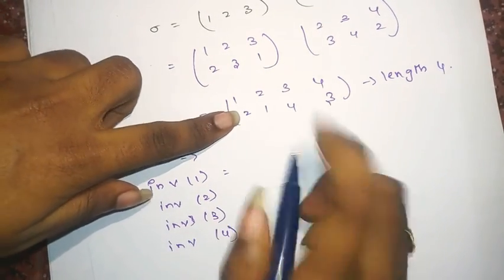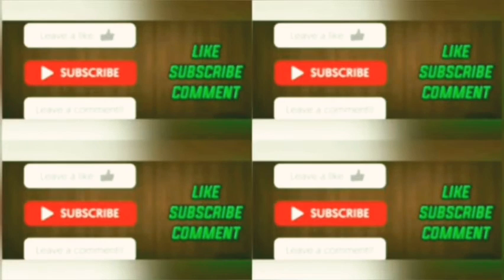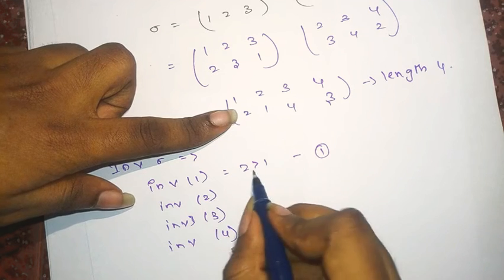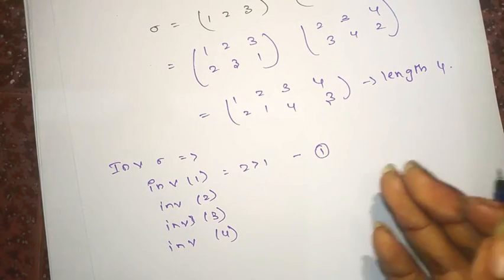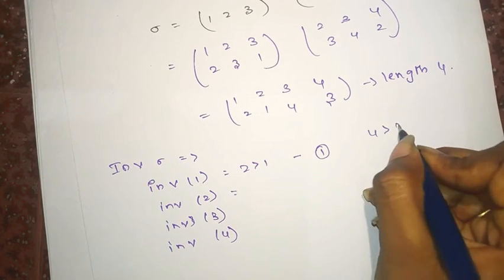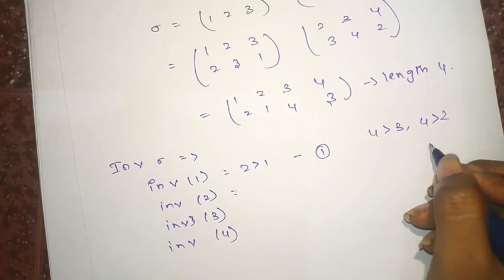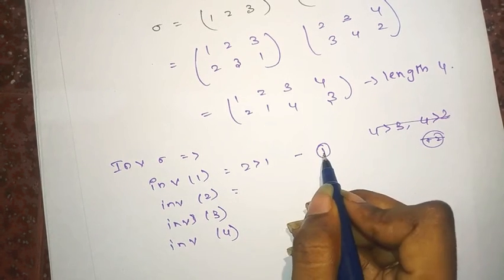Since 2 is greater than 1, it is 1. If you have any questions on other topics, please leave it in the comment box so I can make it clear in my next video. For 4: 4 is greater than 3 and 4 is greater than 2, so I'll add 2 here. Since there is only 1 element before, I add only 1. So inversion of 2 is 1.